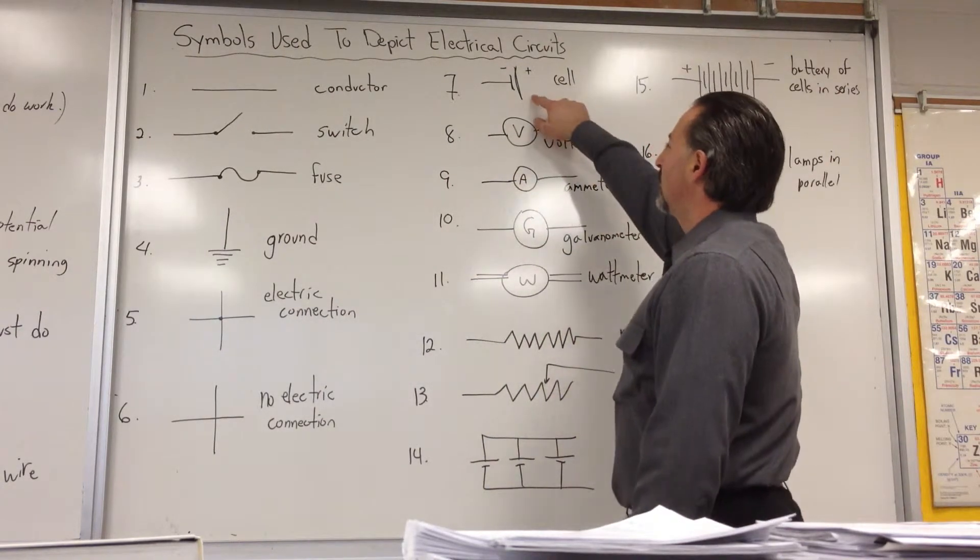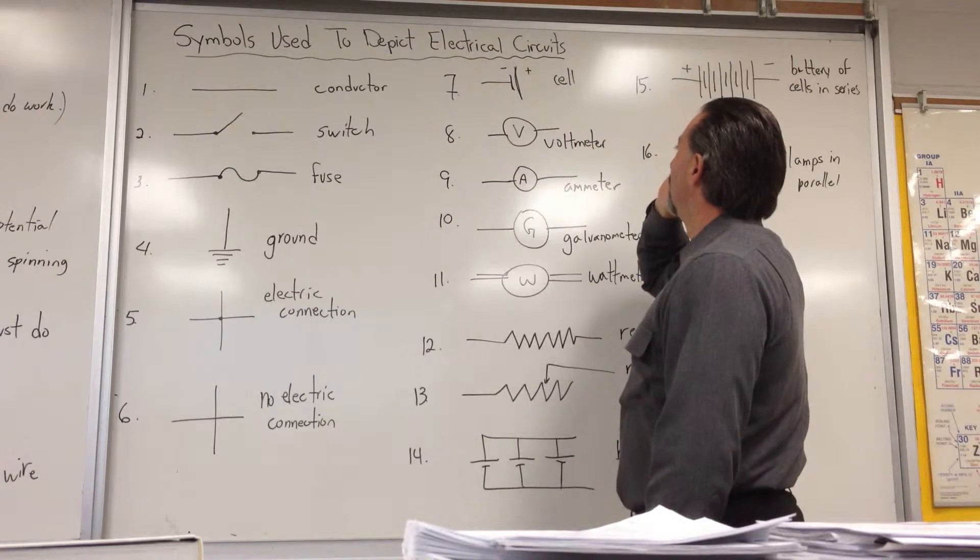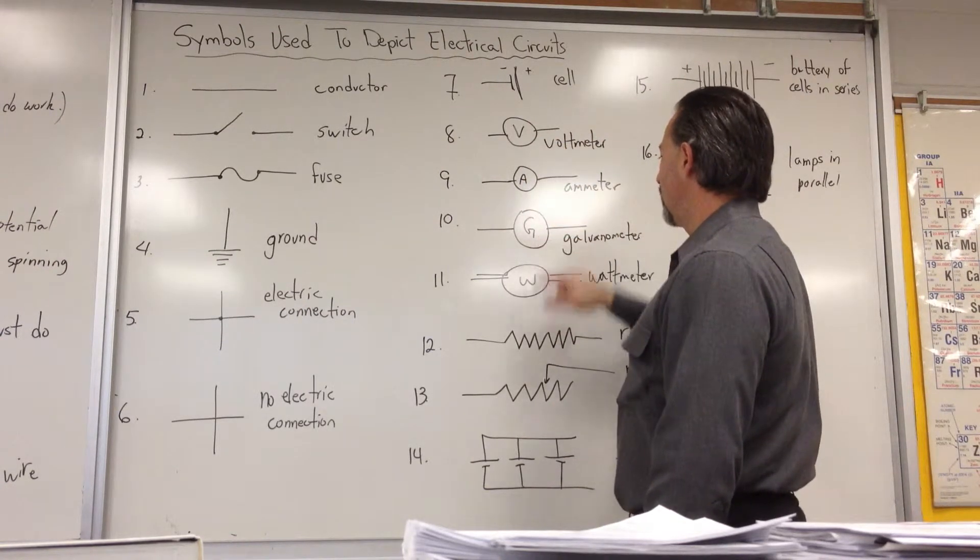This would be a single cell, the cathode and the anode. This is a voltmeter, an ammeter, a galvanometer.